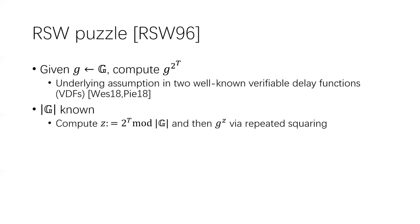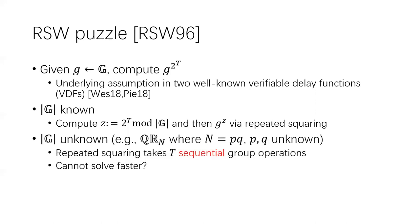Of course, if the group order is known, then you can compute G^(2^T) really fast, because you can first compute the integer Z as 2^T mod the group order, and then instead of computing G^T directly, you can compute G^Z via repeated squaring. So we need to use a group of unknown order — for example, we can use the quadratic residual group QR_N, where N is the product of two large safe primes. Now repeated squaring should take T sequential group operations to complete.